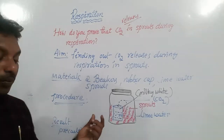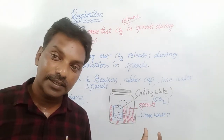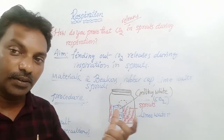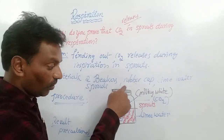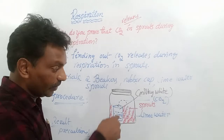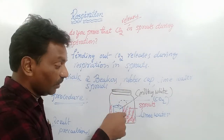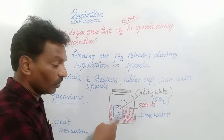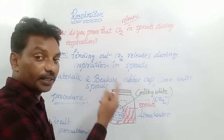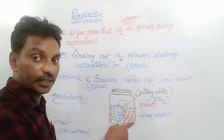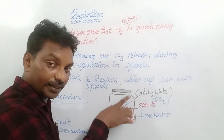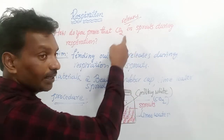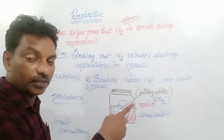Sometimes they will ask: how do you prove that germinated seeds release both heat and carbon dioxide? In that activity, along with a rubber cap, you also insert a thermometer. At the beginning of the activity, note the thermometer reading. At the end, check the reading again — the mercury level increases because the temperature increases in the beaker, and the lime water also turns milky white. So both carbon dioxide and heat are released during respiration in sprouted seeds.